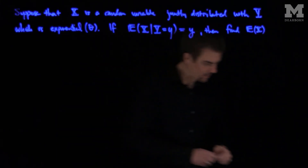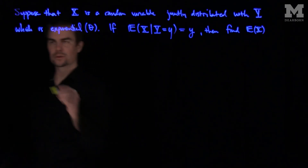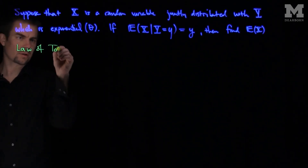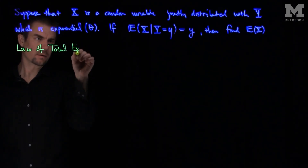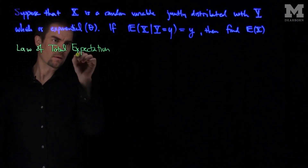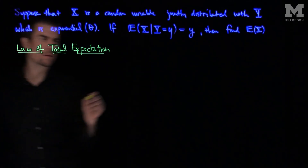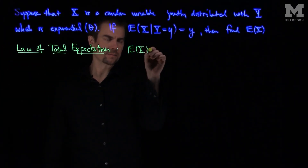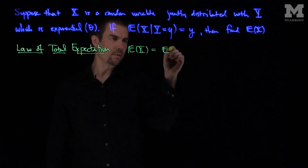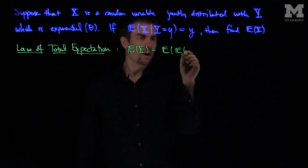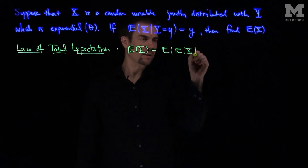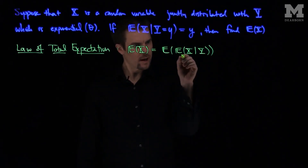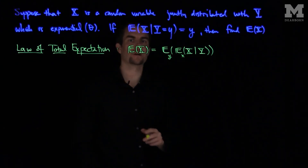To do this problem, we recall the law of total expectation. The law of total expectation is that the expected value of x is the expected value of the expected value of x given y. These are x integrations over here, and these are y integrations over here.